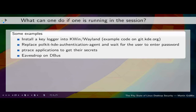If you own the session, you could install a keylogger into KWin-Wayland — example code for that is on git.kde.org in my personal clone. I thought, well, I don't wait for others to write the keylogger against KWin, I do it myself — and it was easy, it took me 10 minutes using old code. You could replace the Polkit-KDE authentication agent and wait till Polkit requests the password. You can ptrace applications to get their secrets, or you can just listen on debug output.